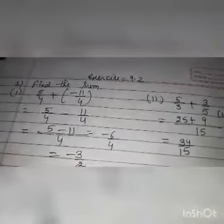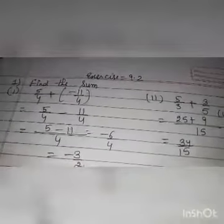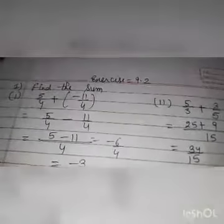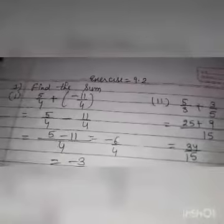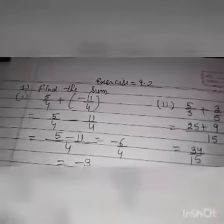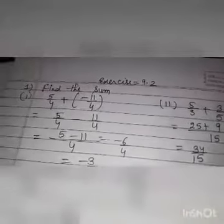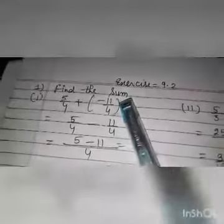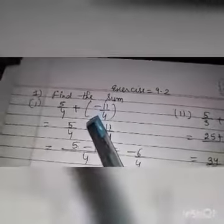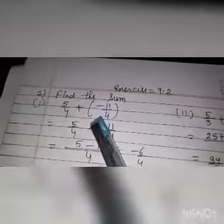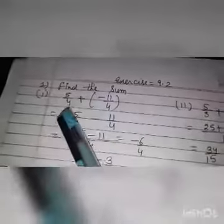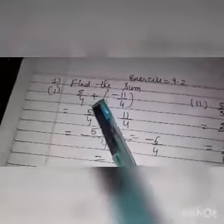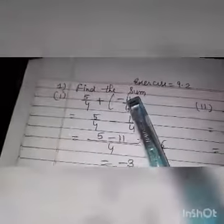Good afternoon to all the students of class 7. Let's start exercise 9.2. The first question is to find the sum. You have to do the addition of two given rational numbers: 5 by 4 plus in bracket minus 11 by 4.